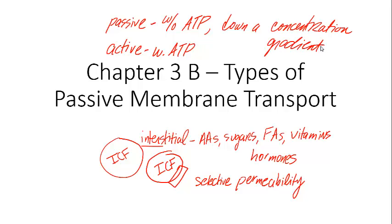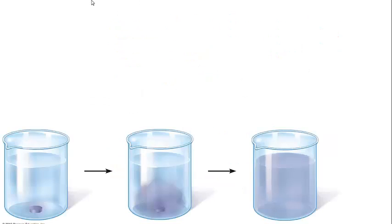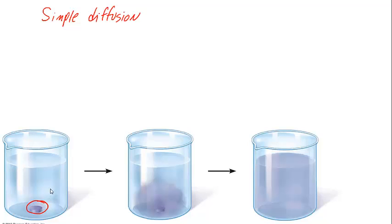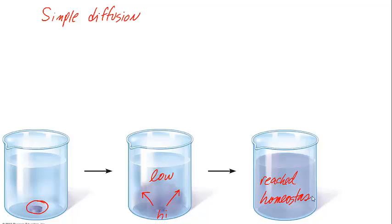The first one we're going to talk about is simple diffusion, which is one of the most important in the body. In simple diffusion, the example shown on the screen is a concentrated tablet — this could be something like Alka-Seltzer. As soon as you put it into water, it's going to start to diffuse. The molecules move from high concentration in the tablet to areas of low concentration, spreading out until they reach homeostasis throughout the entire container.